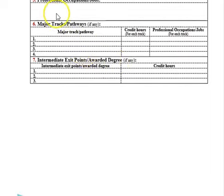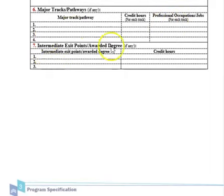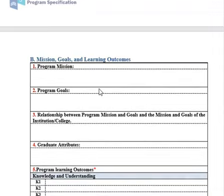Professional occupations: list the places where your graduates will have the opportunity to work. If you have tracks — for example, in electrical engineering you have tracks like control, power, or communications — specify the professional occupations for each. If you have any intermediate exit points such as diplomas, you can add them, but most bachelor programs don't have intermediate exit points, so this is not applicable.